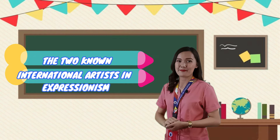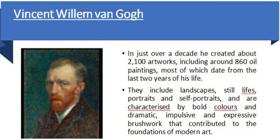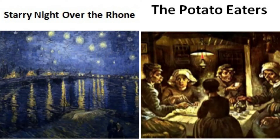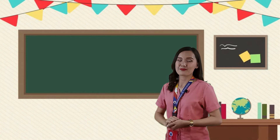There are two known international artists in expressionism. First, Vincent Willem van Gogh. In just over a decade, he created about 2,100 artworks, including around 806 oil paintings, most of which date from the last two years of his life. They include landscapes, still lifes, portraits, and self-portraits, and are characterized by bold colors and dramatic, impulsive, and expressive brushwork that contributed to the foundation of modern art. His artworks include Starry Night Over the Rhône and The Potato Eaters.